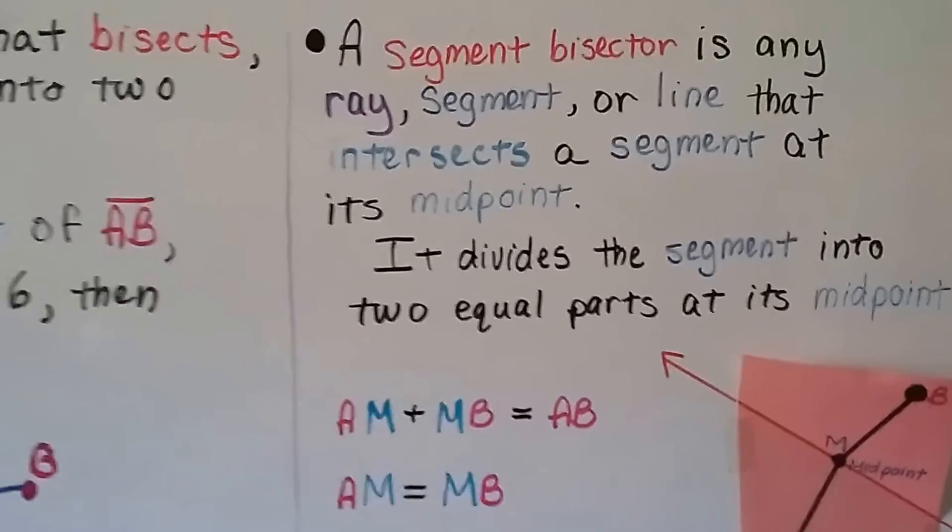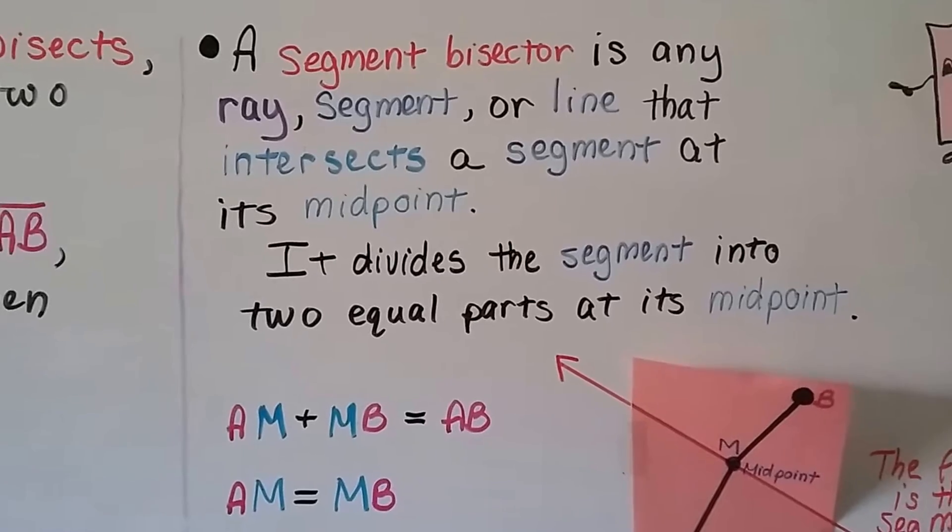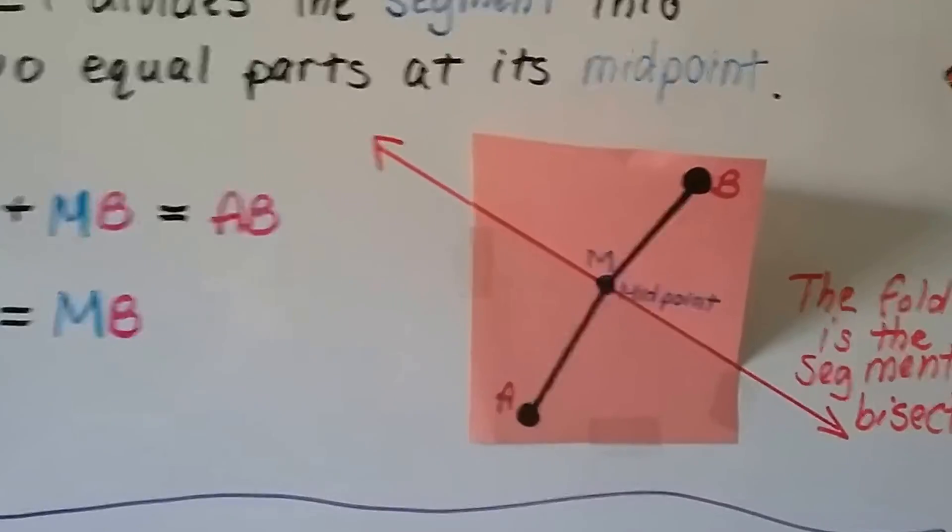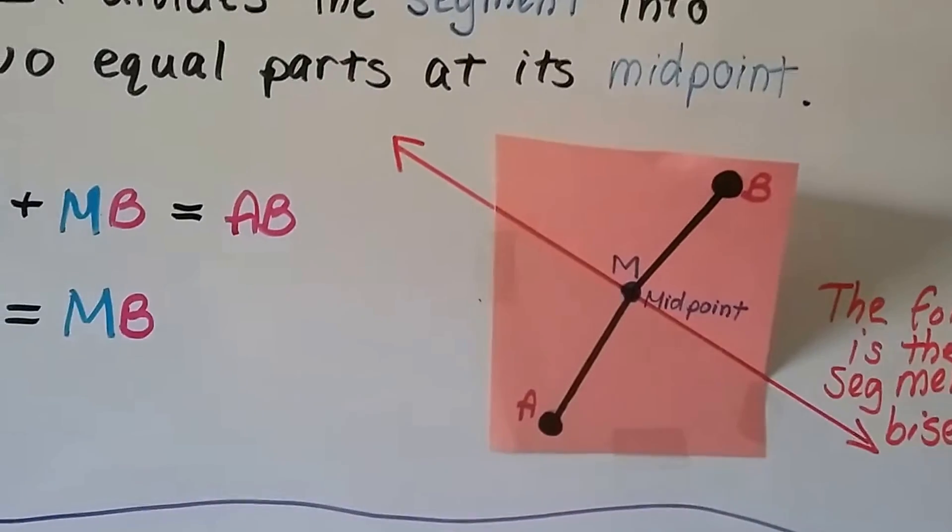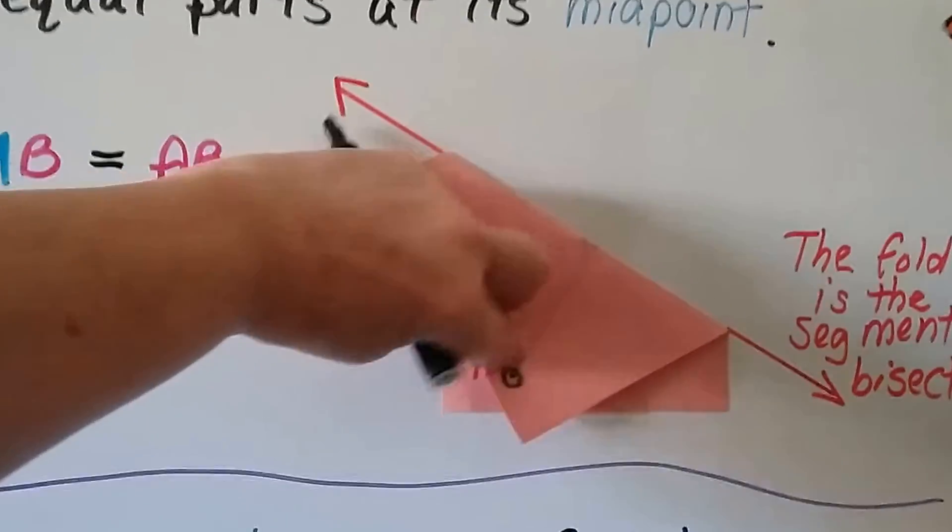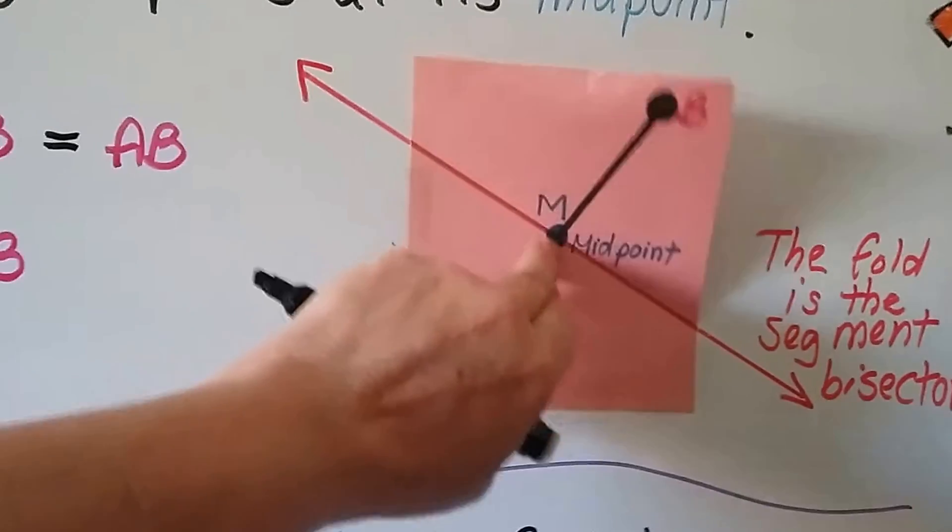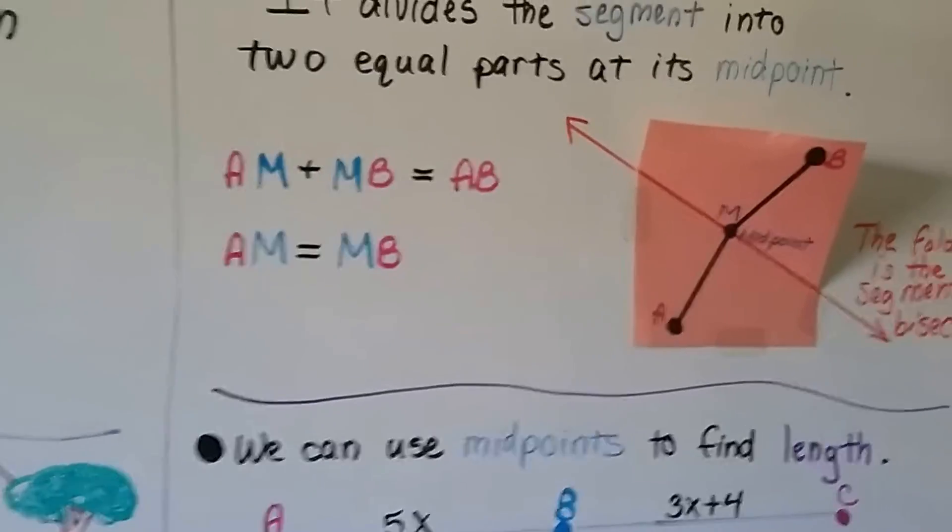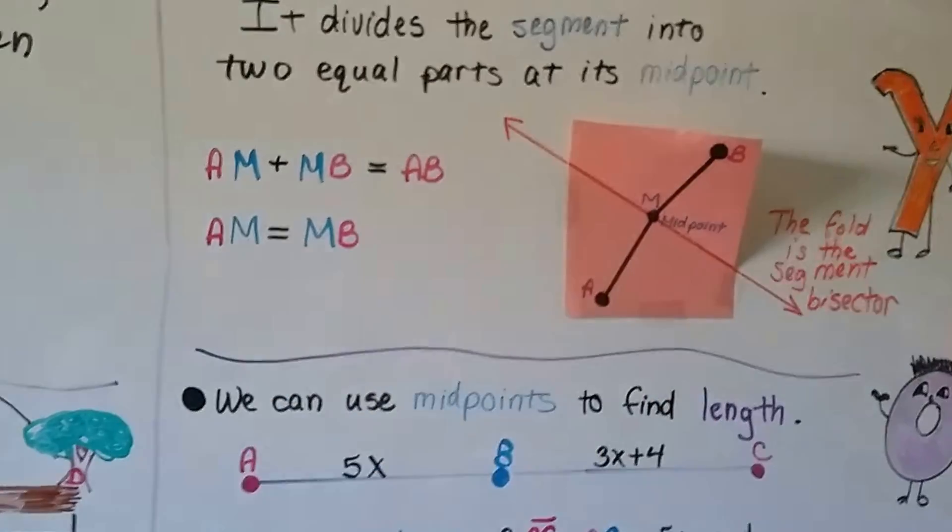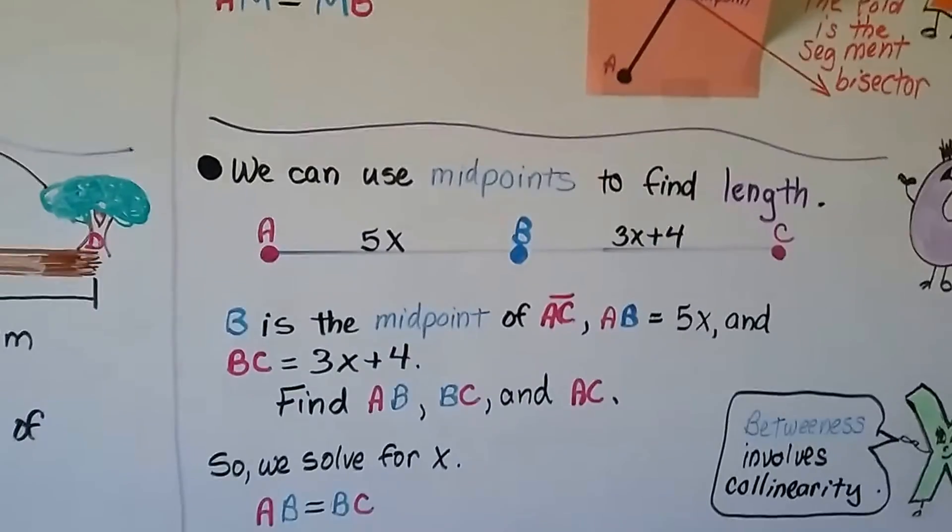A segment bisector is any ray, segment, or line that intersects a segment at its midpoint. It divides the segment into two equal parts at its midpoint. So here I've got a piece of paper, and if you look, I've got two points, A and B, drawn on here. All we have to do is fold this paper so that point B is right on top of point A, like that. And where we fold it, that's going to be the segment bisector. Right at the midpoint. We know that's the center, because we folded it in half and made the points touch each other. So AM here plus MB is equal to AB. And we know AM is equal to MB, because we folded it in half and it was perfect. And we can use midpoints to find length.